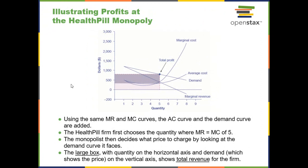Since a monopolist can affect the price, they are going to try to charge the highest price possible. In a perfectly competitive market, a firm would want to do that as well, but since there are so many other buyers and sellers, raising the price even one penny lets competition eat up all their business. A monopolist doesn't need to worry about that. So the monopolist produces where marginal revenue equals marginal cost, then charges the highest price possible as determined by the demand curve. The difference between average costs and the price paid is their economic profit. A monopolist earns extra-normal profit.